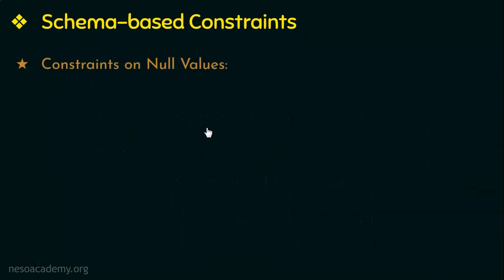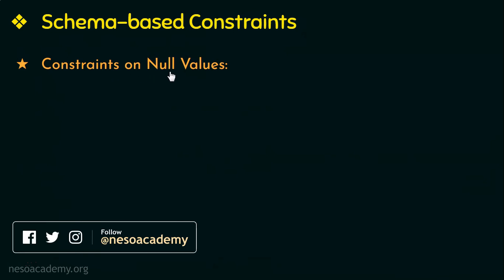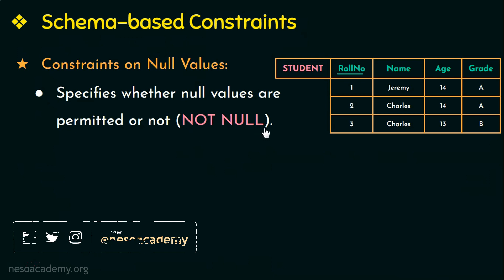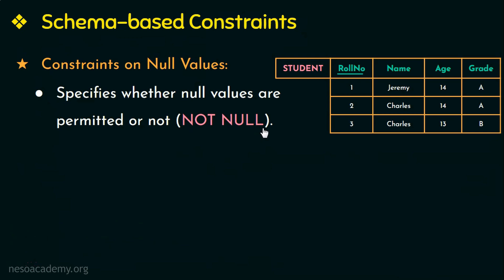Another constraint on attributes is constraints on null values. This constraint specifies whether null values are permitted or not. For example, in the relation student, if every tuple in the name attribute has to have a valid value and cannot be null, then this attribute should be constrained to not null. When this constraint is specified for any attribute, the values of that attribute cannot be null.